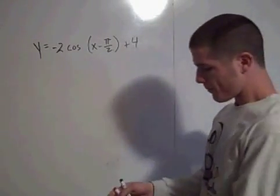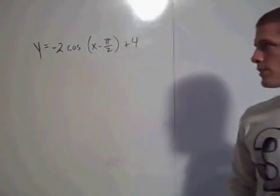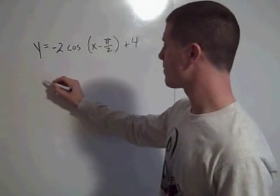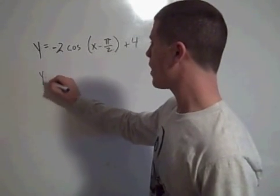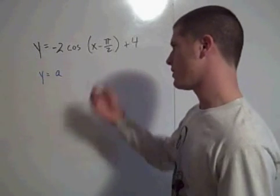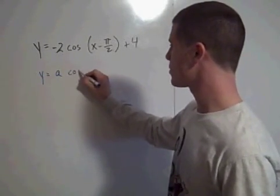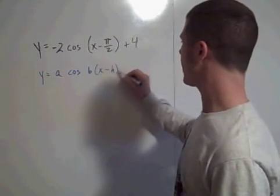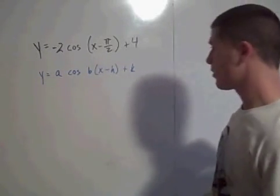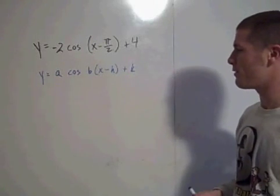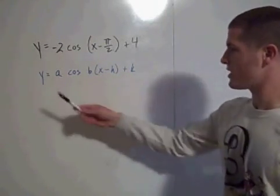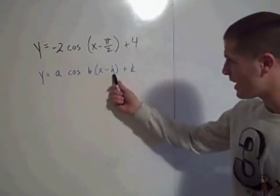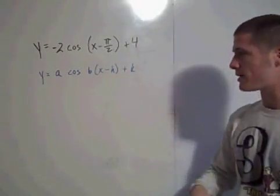So, all of these trig functions come sort of in the same flavor. Remember, they're all in the form y equals a times the sine or cosine. I'm looking at cosine right now. So, cosine of b times x minus h plus k. Okay, so there's a lot of constants there. So, you have to know what this a value does to the graph, what the b value does to the graph, what the h value does to the graph, and what the k value does to the graph.